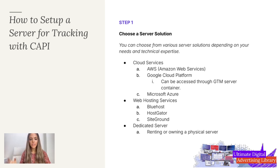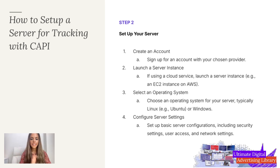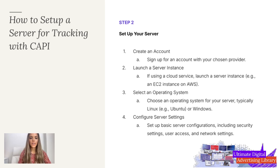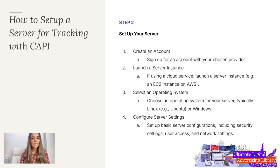Now that we have our server solution, step two is to set up your server. You're going to create an account for that specific provider and launch a server instance — for example, an EC2 instance on Amazon Web Services. Then you're going to select an operating system for your server, typically Linux or Windows, and then configure your server settings including security settings, user access, and network settings.